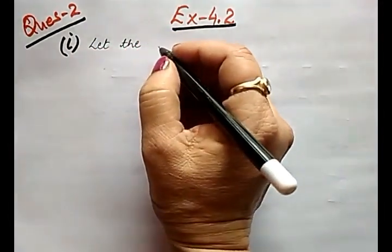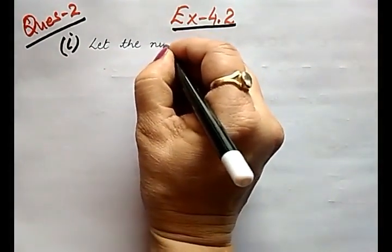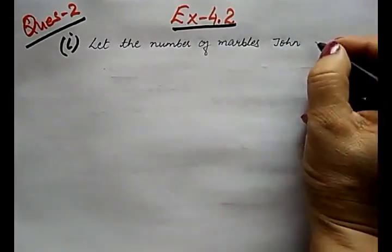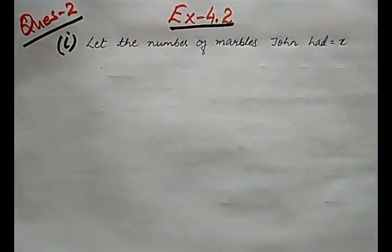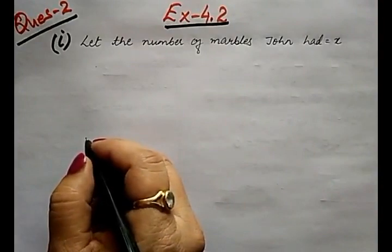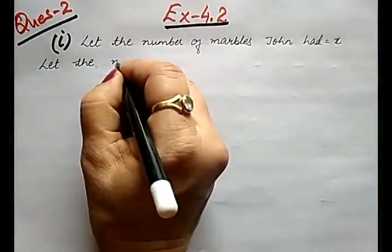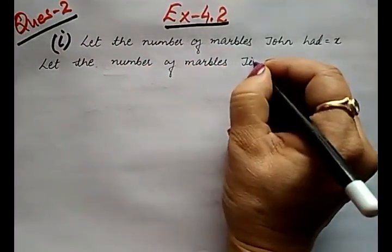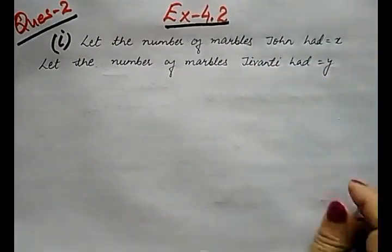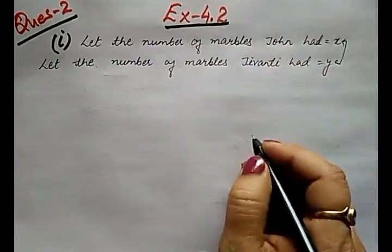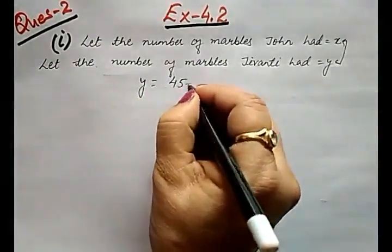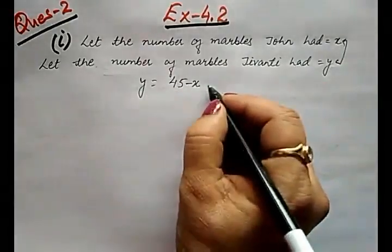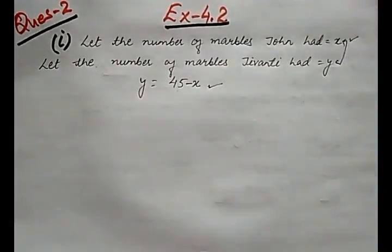Let the number of marbles John had equal x. Similarly, let the number of marbles Jeevanthi had equal y. Now we know that total marbles together are 45. So y becomes 45 minus x. If he has 10, then Jeevanthi has 45 minus 10, that is 35. So Jeevanthi has 45 minus x and John has x number of marbles.